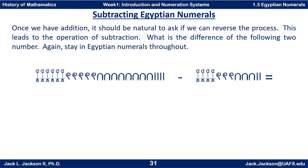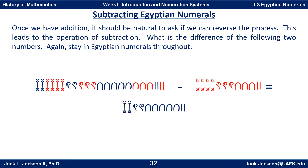Once we have addition, it's natural to ask if we can reverse the process — this leads to subtraction. The key to subtraction is cancelling out like groups. Each of the red symbols from the second number is cancelled out with the matching red symbol from the first number. We cancel out two staffs, leaving two staffs. The three heel bones cancel with three heel bones, leaving five heel bones. Three scrolls cancel, leaving two scrolls. And four lotus flowers cancel, leaving two lotus flowers.